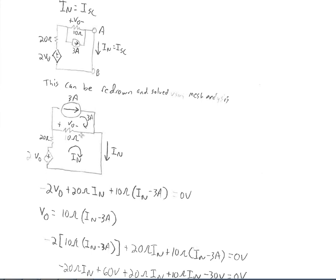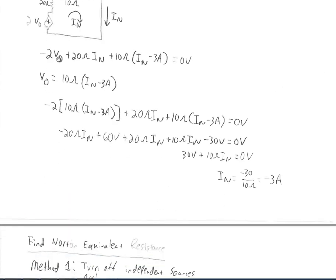We can solve for VO because it equals the current through the 10 ohm resistor times 10 ohms, so VO equals 10 ohms times (IN minus 3 amps). Substituting back into our mesh equation everywhere we see VO, we plug in 10 ohms times (IN minus 3 amps). Distributing the negative 2 and the 10 ohms gives: negative 20 ohms·IN plus 60 volts plus 20 ohms·IN plus 10 ohms·IN minus 30 volts equals 0. This simplifies to 30 volts plus 10 ohms·IN equals 0, so IN equals negative 3 amps.